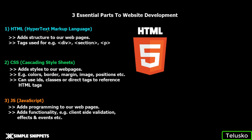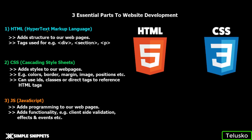The next thing is CSS, which is Cascading Style Sheets. CSS enhances HTML by adding styles to our web pages — for example, color, border, margin, image positions, etc. All these things can be handled in a separate file or embedded in the same HTML file. There are two or three different ways to use Cascading Style Sheets, but the idea is that to add design aspects and styles, we use CSS.